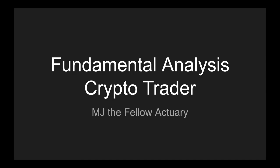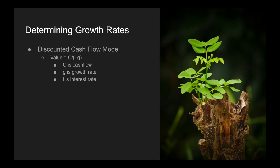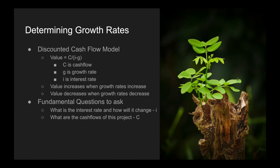Hi everyone, it's MJ. Welcome back to the series of videos on fundamental analysis for crypto traders. In this video, we're going to be determining the growth rate. In our discounted cash flow model — value = C/(I−G) — C is for cash flow, G is for growth rate, and I is the interest rate. The value increases when the growth rate increases, and decreases when the growth rate decreases. The key questions in fundamental analysis are: what is the interest rate and how will it change, what are the cash flows of this project, and how are those cash flows expected to change in the future — that's the growth rate G.